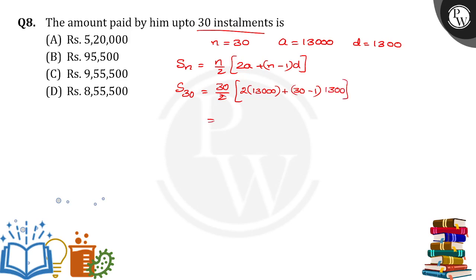Okay, so 30 by 2 is equal to 15 into 2 into 13,000 is 26,000, plus 30 minus 1 is 29. 29 into 1,300.